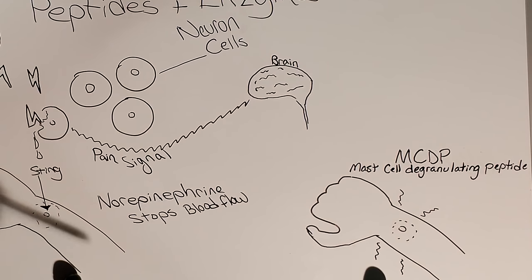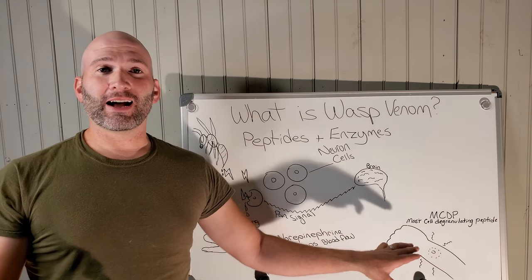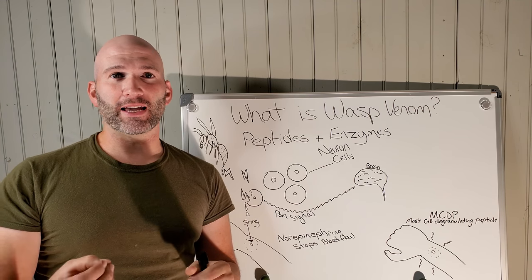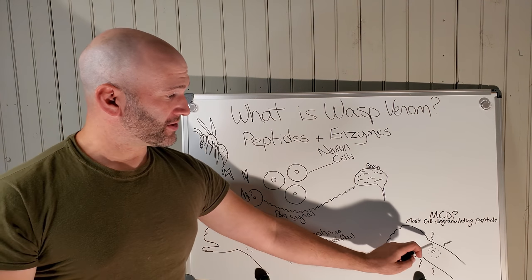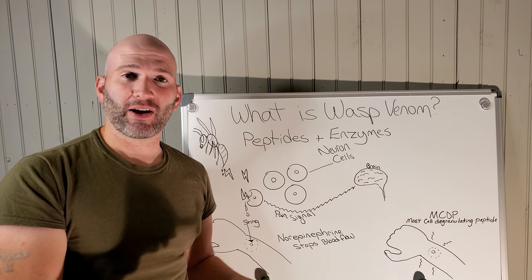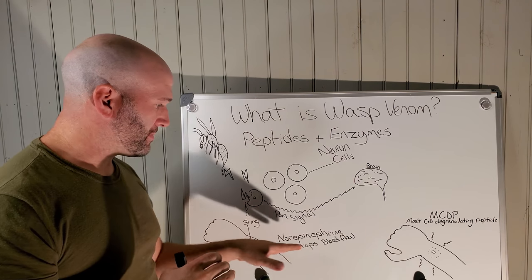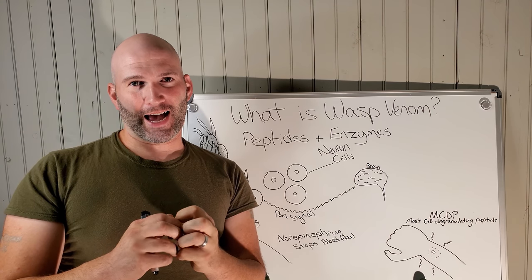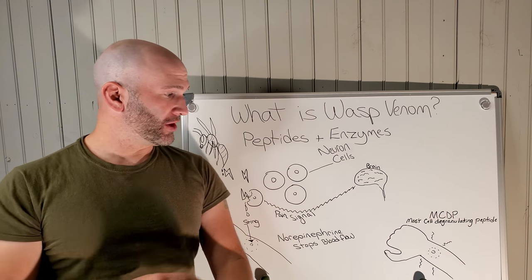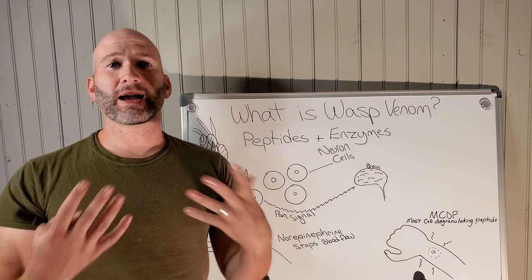There's a third aspect to the venom: MCDP, a mast cell degranulation peptide. It starts breaking down connective tissues and further cells in a chain reaction. It causes more inflammation and swelling, and as blood makes its way in, blood cells and white blood cells start getting attacked. The area really swells and becomes inflamed. The body isn't reacting so much to the venom itself as to the mechanism of the venom.